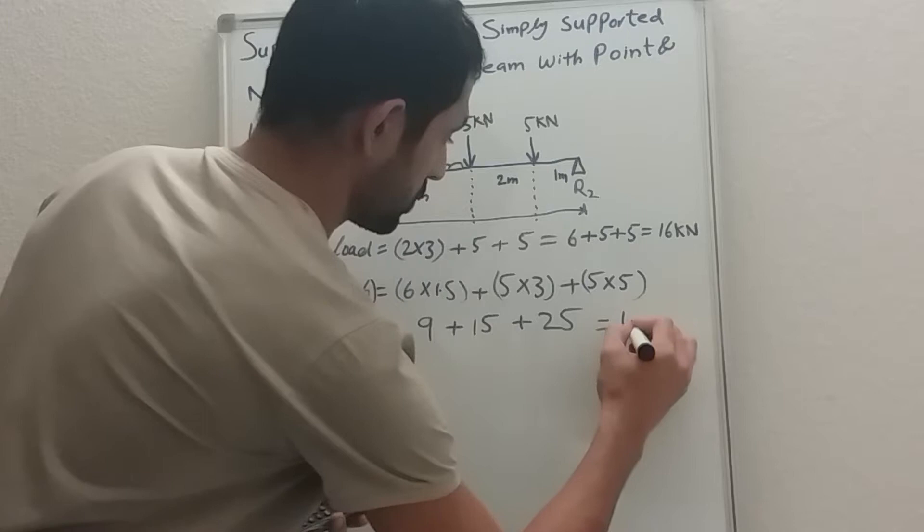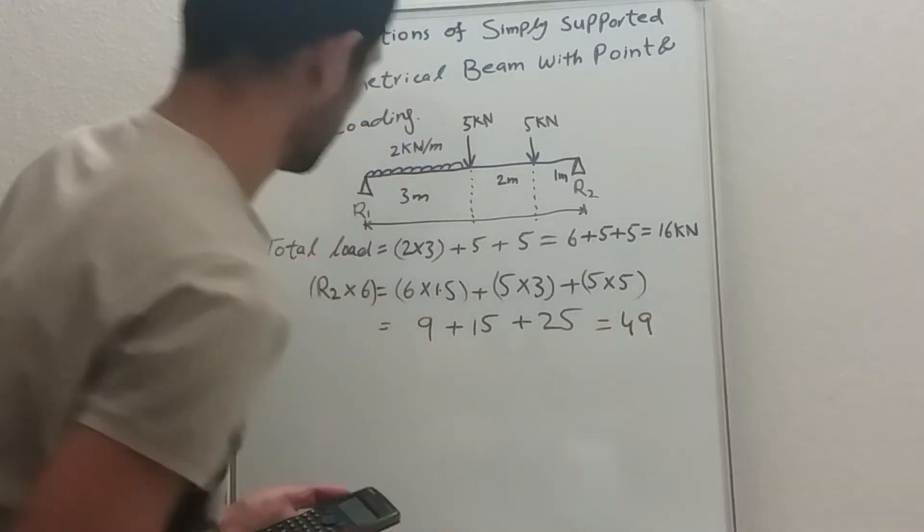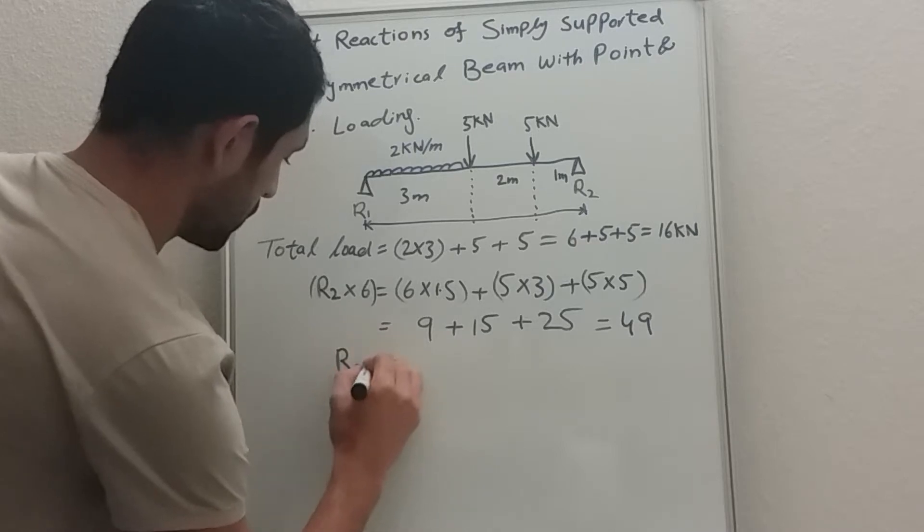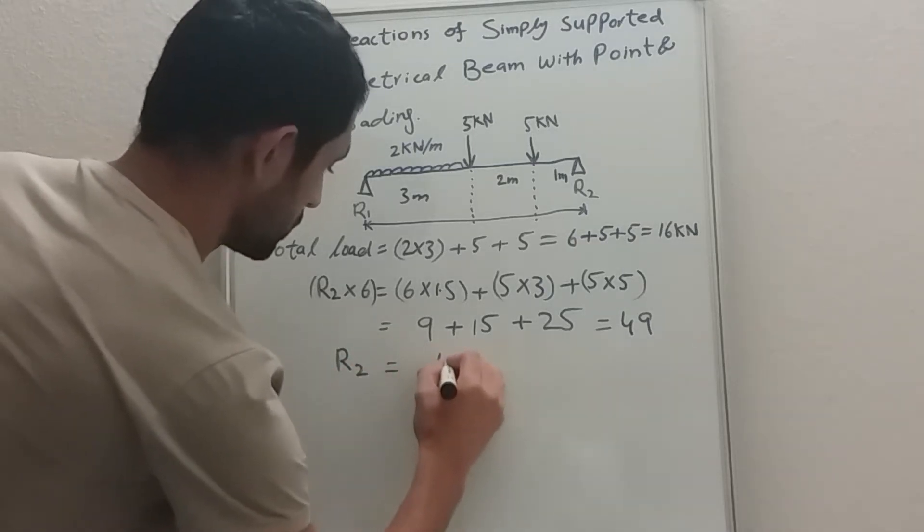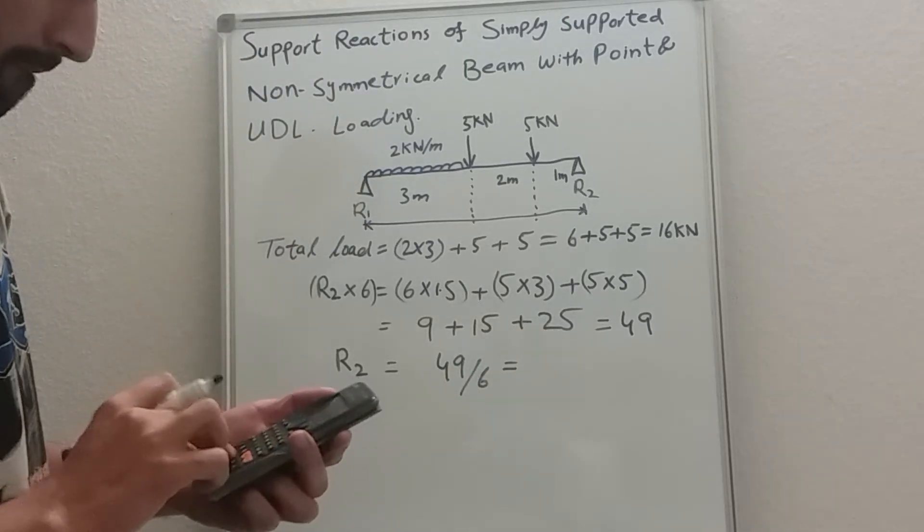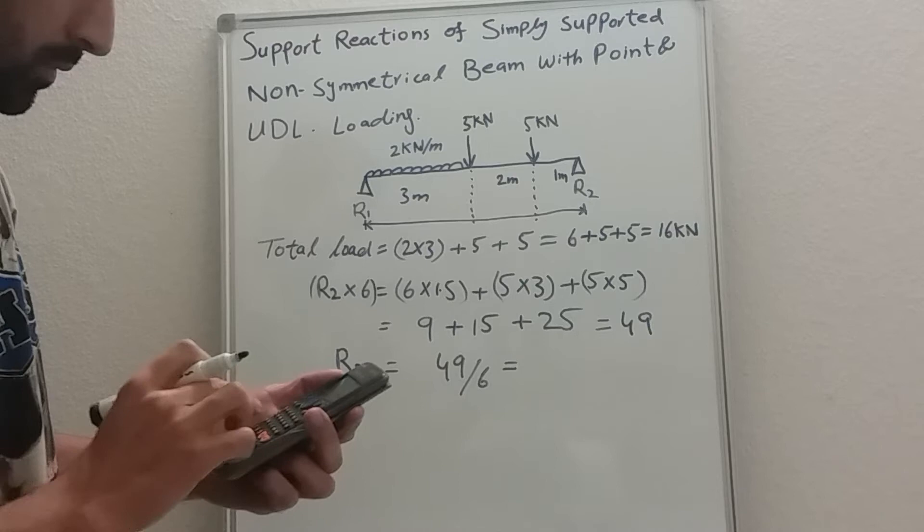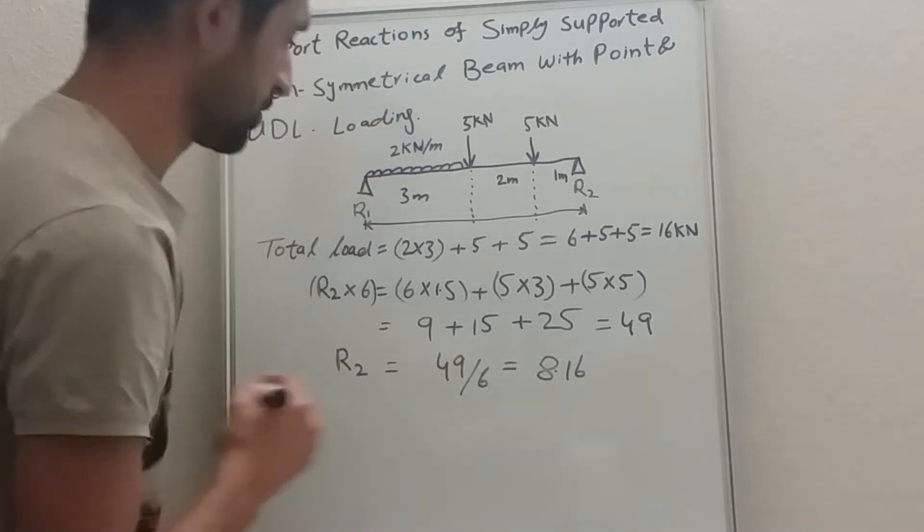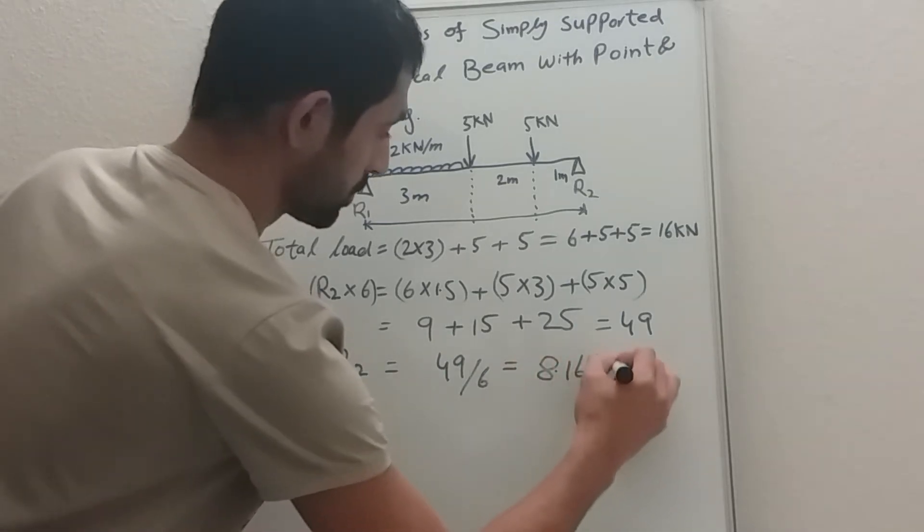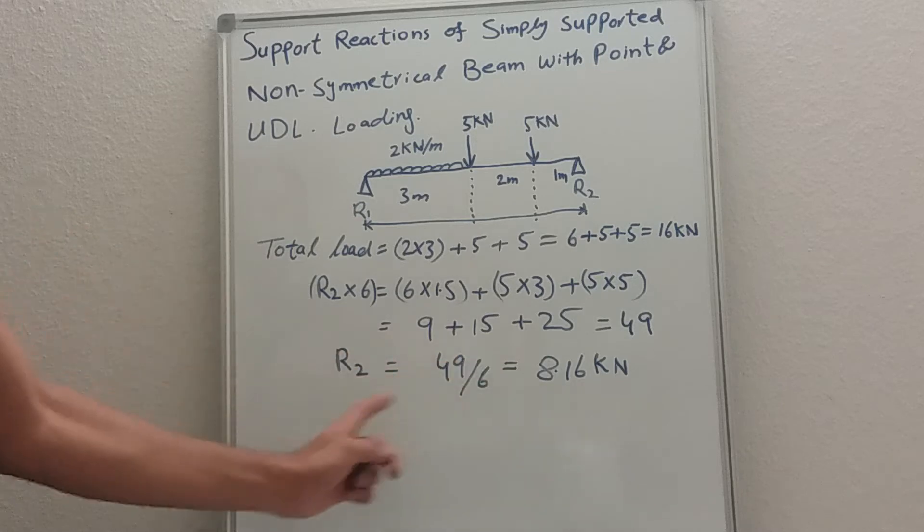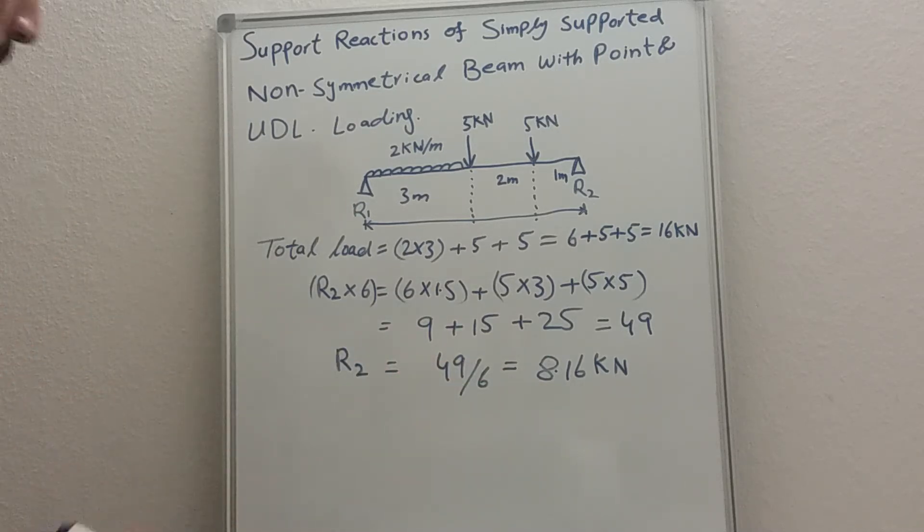So R2 is equal to forty-nine divided by six, which gives 8.16. So 8.16 kilonewtons is on our R2.